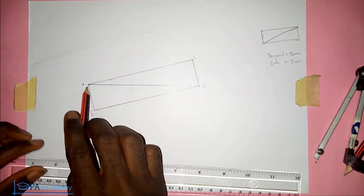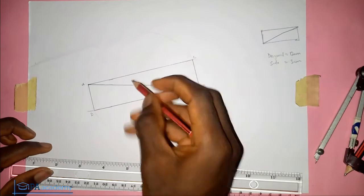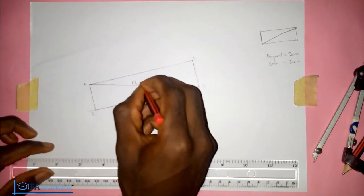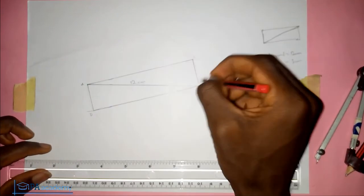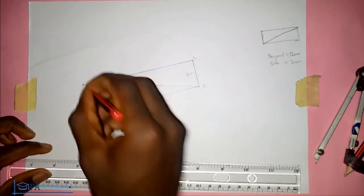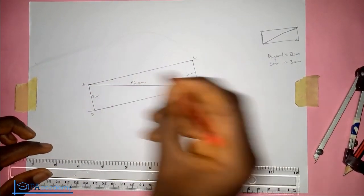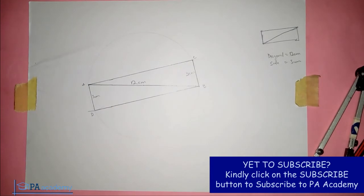So that is the rectangle where we're only given the diagonal and the length. So the diagonal here is 12 cm while the side is 3 cm, this side is also 3 cm. So that is it for this video. If you find this video helpful, kindly click on the like button, also please share this video. If you're not subscribed to PA Academy, please click on the subscribe button and I'll see you all in another video. Thank you.